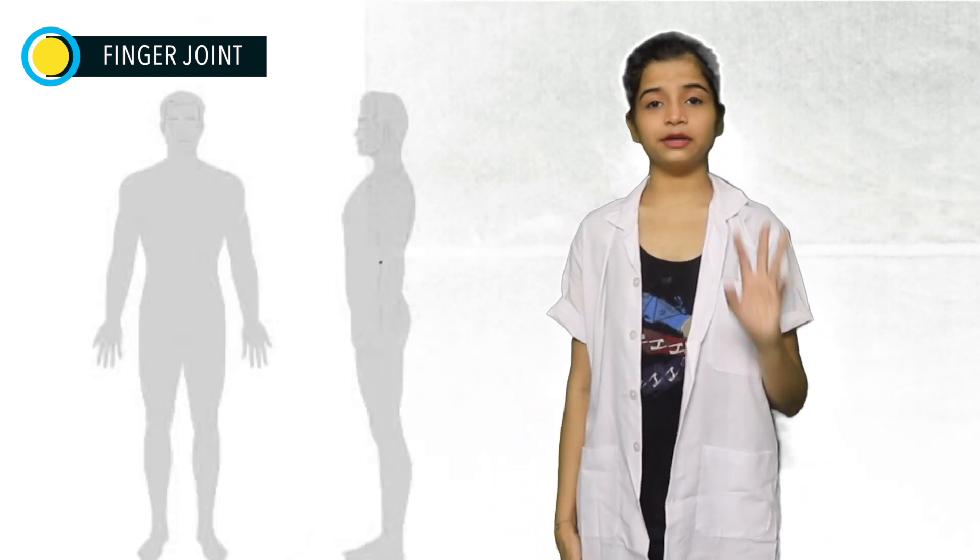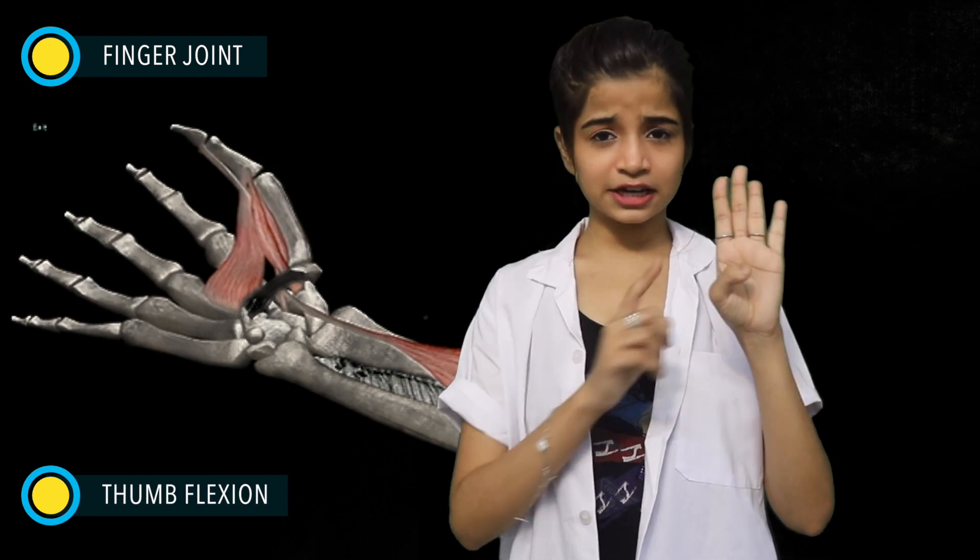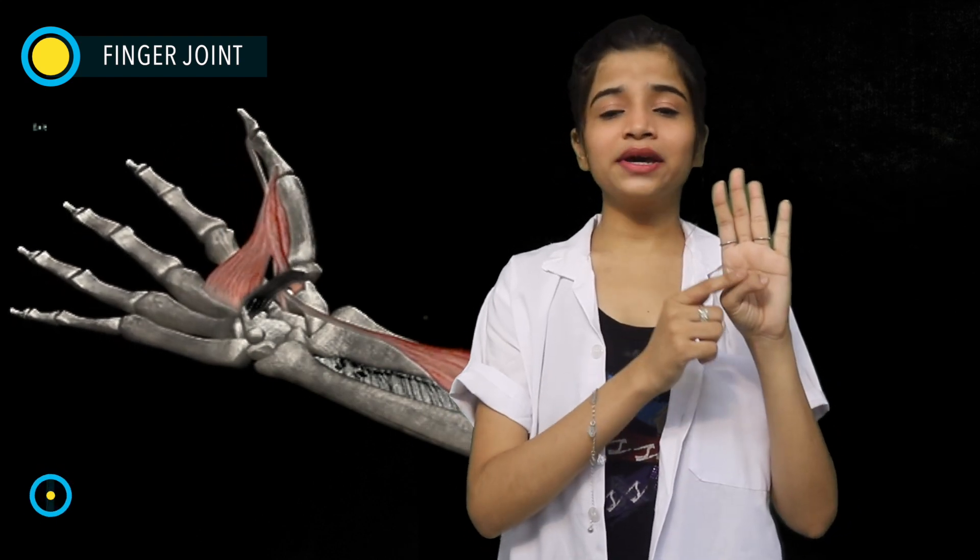Now talking about the last and very important part — the thumb. When a person is standing in the anatomical position with the palm facing front, the thumb is the outermost digit. The thumb is flexible and movable, helping us hold or catch things easily, making it an important finger distinct from the rest.